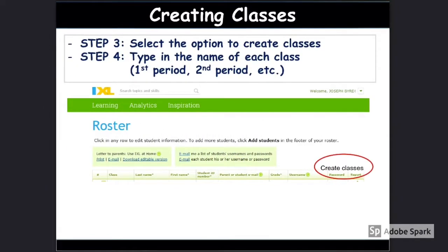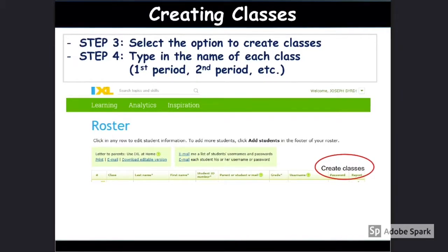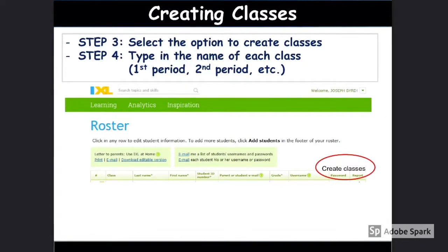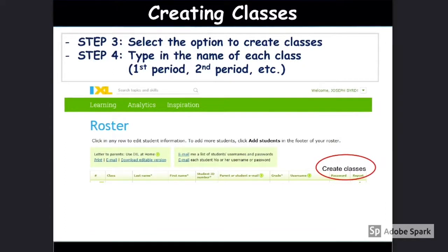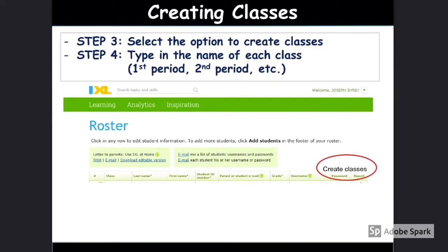Although it doesn't show up on my screen, the upper right side you should have an option to create classes. I circled the area where it should be located. Once you do that, type in the name of each class, for example first period, second period, third period, etc.